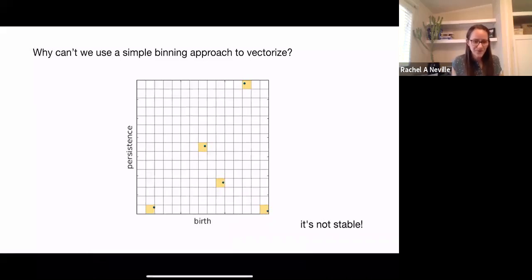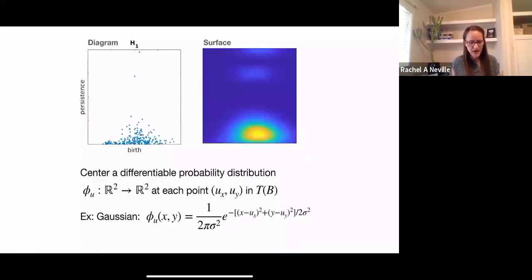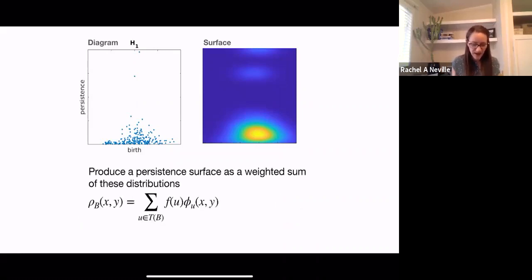To counter this, we're going to center a differentiable probability distribution at each point in our diagram. A common choice here is the normalized symmetric Gaussian. Here we have a mean of u and variance of sigma squared in this example. We're going to take that and produce a persistence surface as a weighted sum of all of these distributions. So this is important for the representation to be stable.